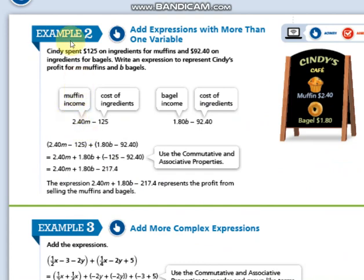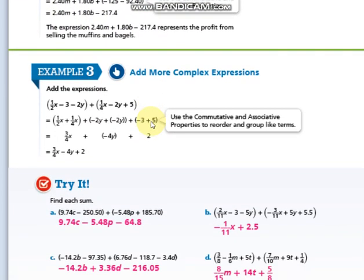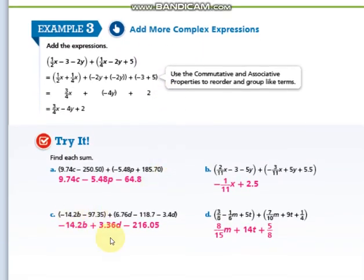As you can see here in adding expressions, this is the first expression and here is the second expression. I'm going to reorder the terms, which is how I'm applying the commutative and associative properties. Here I'm going to put each like terms together in order to get the final answer. You can see another example here and you are going to try to do the try-it part by your own.